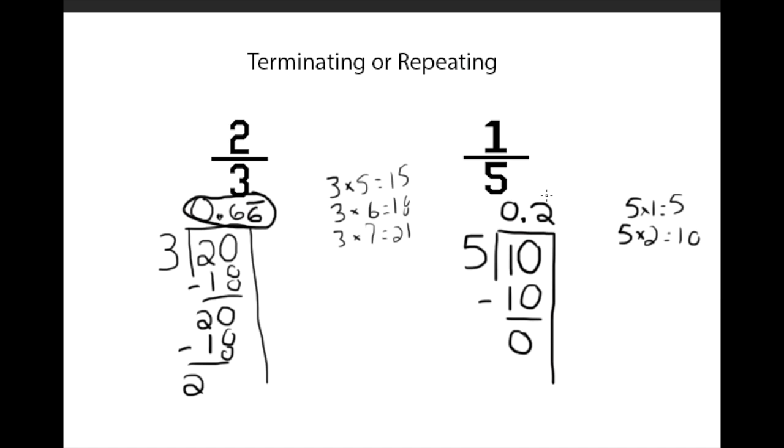So our solution is 0.2, which is, in fact, a terminating decimal, because it does not continue on forever.